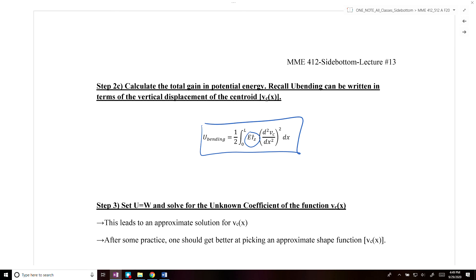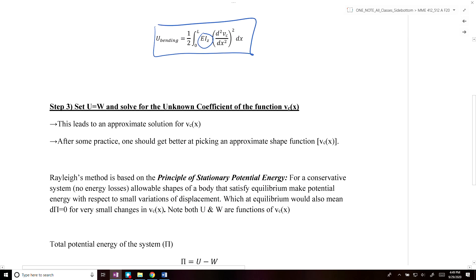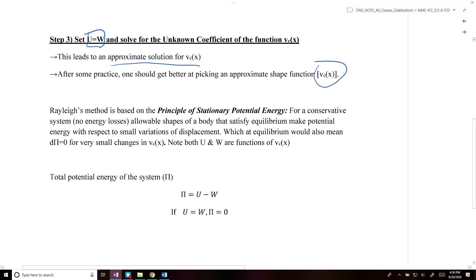Now we should have U and W for our system. The last step is to set U equal to W, and then we can solve for the unknown coefficient. This will give us an approximate solution for Vc(x). Depending on your initial shape function, you might get a more or less accurate answer for Vc(x).